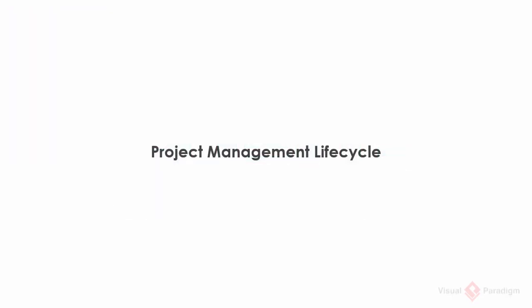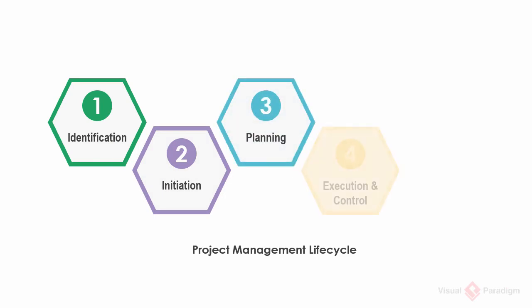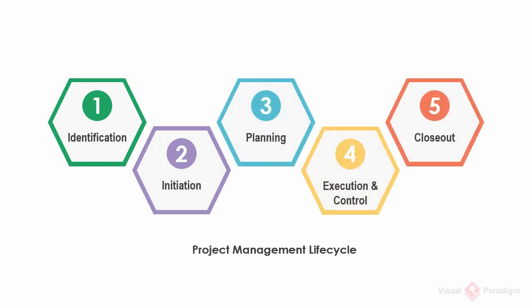The first one, the project management lifecycle. An IT project can be divided into five distinct phases, from identification of project until closeout. Each phase is a collection of related project activities. Each project progresses through the five phases, completing the activities required, and producing a set of related document outputs. Here is a quick walkthrough of the five phases.